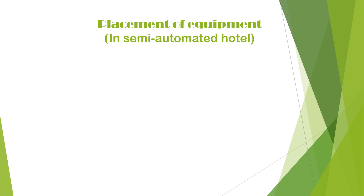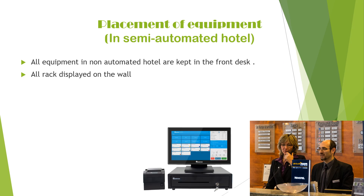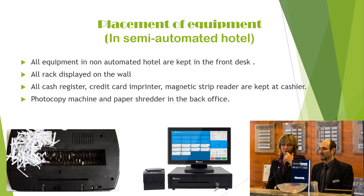Regarding the placement of equipment: in semi-automated hotels, all equipment in non-automated hotels is kept in the front desk area, with all racks displayed on the wall. Equipment such as cash register, credit card imprinters, and magnetic strip readers are kept at the cashier. Photocopy machines and paper shredders are mostly placed in the back office.